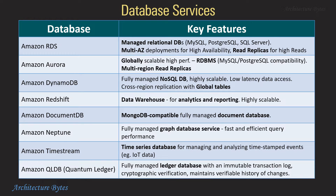Redshift is a data warehouse for analytics and reporting. DocumentDB is a MongoDB-compatible document database. Neptune is a graph database. Timestream is a time series database for timestamp data. Amazon QLDB is a ledger database with an immutable transaction log.